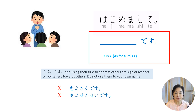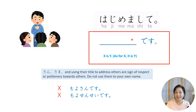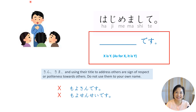One very important rule: titles, san, and sama are used to address others to show respect or politeness. You do not use them with your own name. In English you can say 'Hi, I'm Moyo-sensei' and it's fine, but in Japanese you don't put sensei after your own name. The same applies to san. If your name is Lisa and you introduce yourself, say hajimemashite, Lisa desu — not Lisa-san desu. Please remember that.